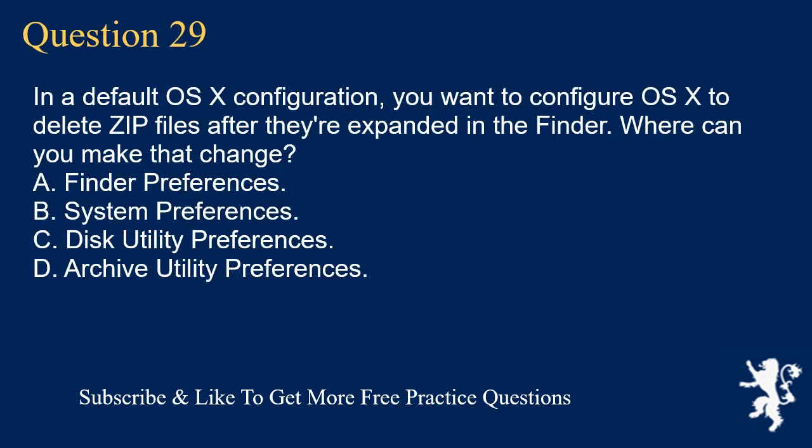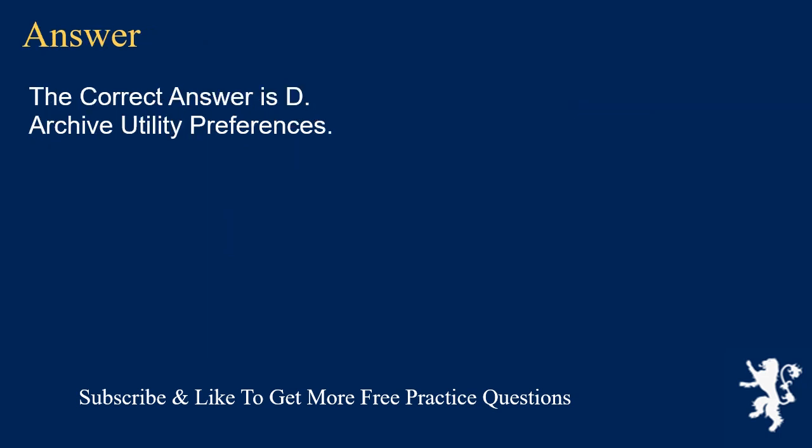Question 29. In a default OSX configuration, you want to configure OSX to delete zip files after they're expanded in the Finder. Where can you make that change? A. Finder Preferences. B. System Preferences. C. Disk Utility Preferences. D. Archive Utility Preferences. The correct answer is D: Archive Utility Preferences.